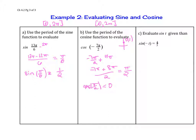Evaluate sine of t given that sine of negative t equals 4/5. Remember that sine is odd, so sine of t would therefore be negative 4/5, the opposite.